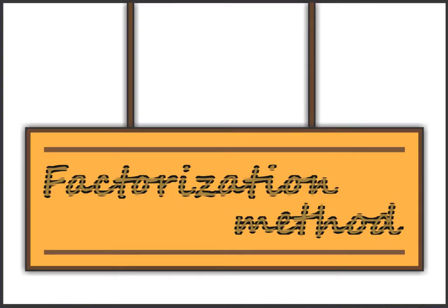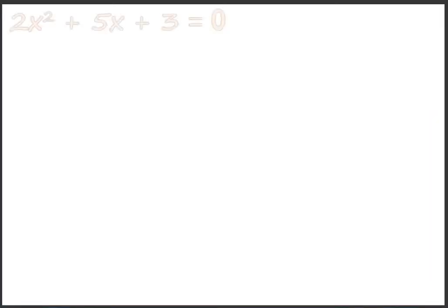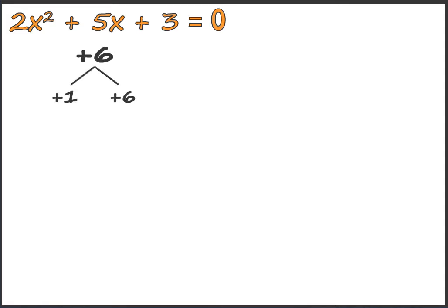Today's topic is factorization method. We will first learn splitting the middle term. You can see the example on the screen: 2x squared plus 5x plus 3 equals 0. Here the middle term is 5x. By multiplying 3 and 2 we get plus 6.